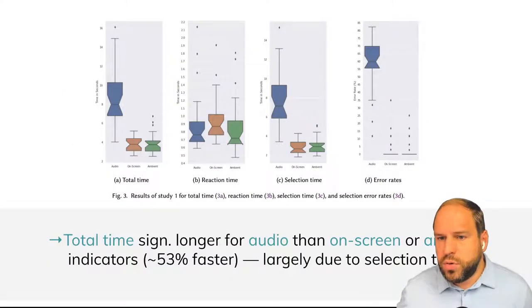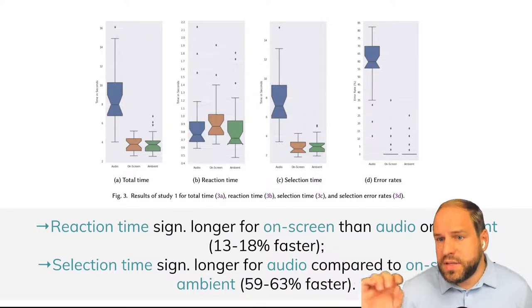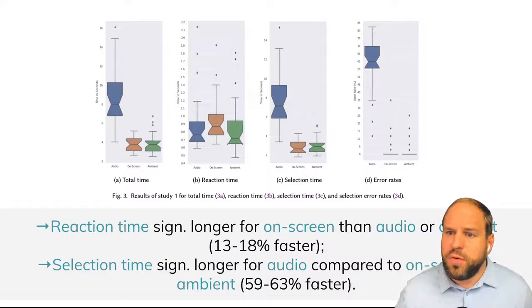So here we can see that for the total time, it took significantly longer for audio than for on-screen or ambient indicators, about 53% faster. And this is largely due to selection time. We also looked at reaction time and selection time. Reaction time took significantly longer for on-screen than for audio or ambient, about 13 to 18% faster.